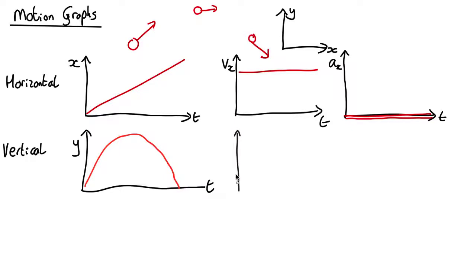How about the vertical velocity, v in the y-direction against time? This velocity is going to start off positive because it's going up. At the top of its arc, the velocity is going to be zero, and then the velocity is going to become negative. So it's going to look something like this.